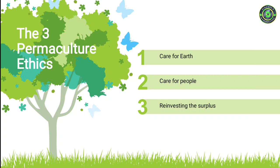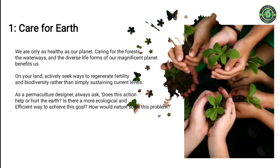The three permaculture ethics are the foundation of permaculture design, which value natural systems. They are: care for earth, care for people, and reinvesting the surplus abundance. First, care for earth — we are only as healthy as our planet. Caring for the forests, the waterways, and the diverse life forms of our planet benefits us. On your land, actively seek ways to regenerate fertility and biodiversity rather than simply sustaining current levels.